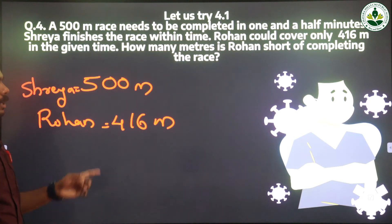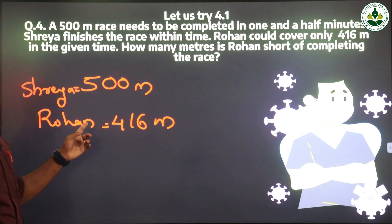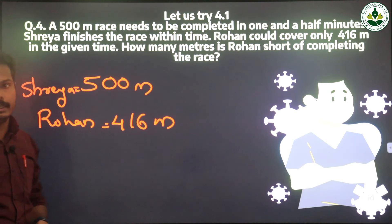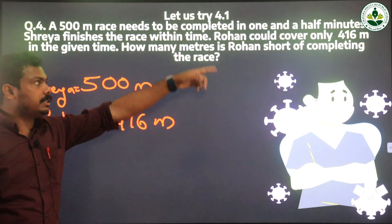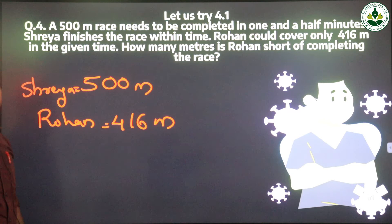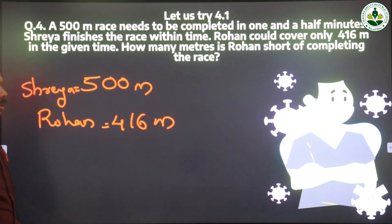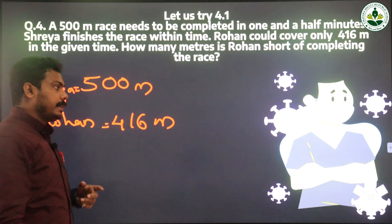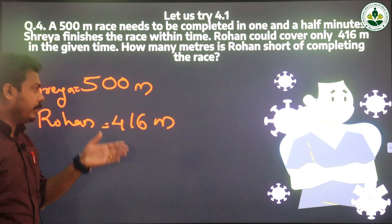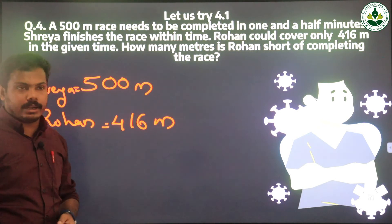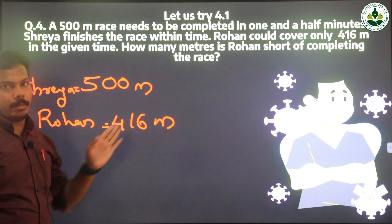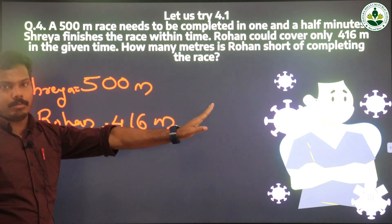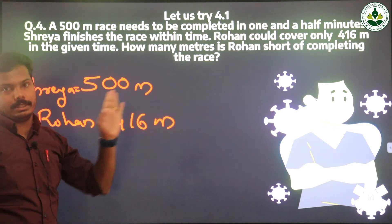We need to find how many meters Rohan is short of completing the race. He needs to complete 500 meters, but he only completed 416 meters. How much more distance does he need?